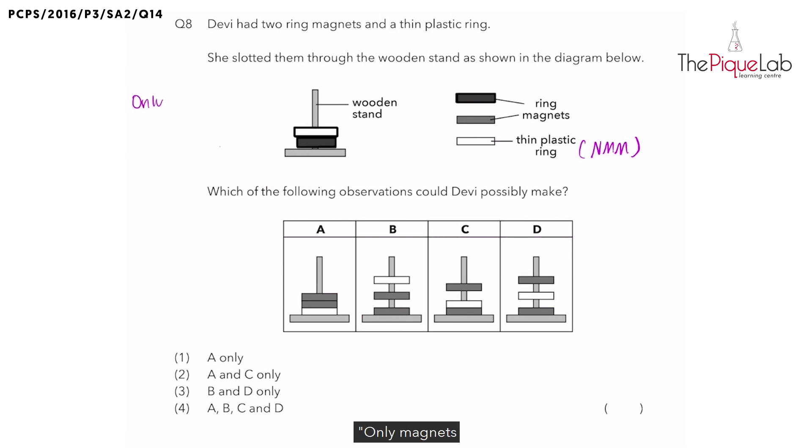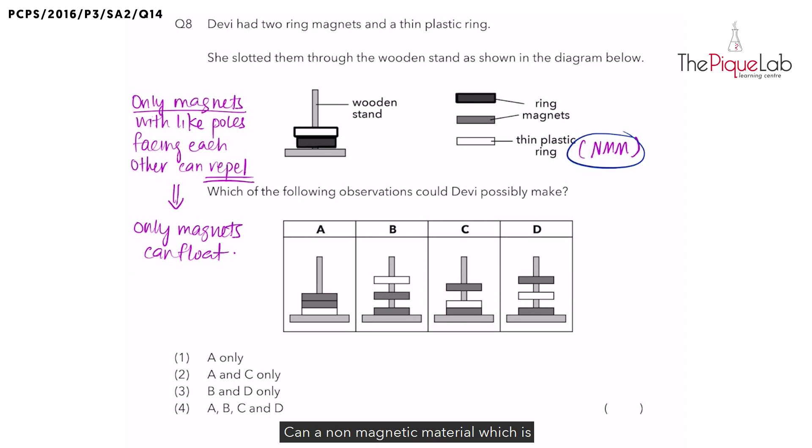So I want us to write this down. Only magnets with like poles facing each other can repel. So what can we learn from this? Since only magnets with like poles facing each other can repel, it means only magnets can float. Can a non-magnetic material, which is the plastic in this case, float? Cannot. Only magnets can float when placed through a stand like this.